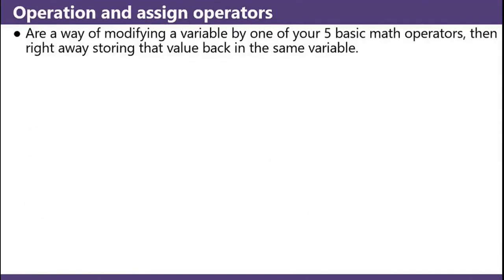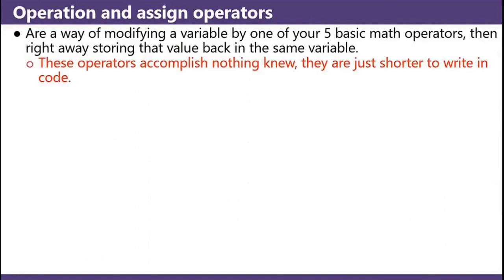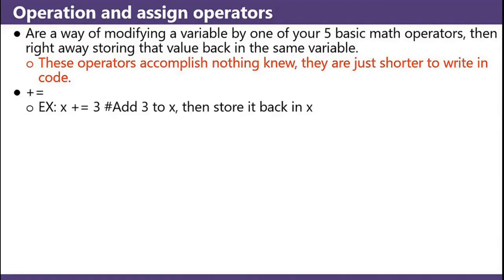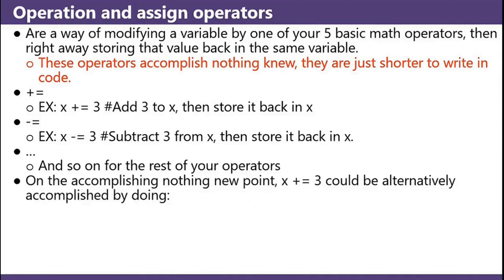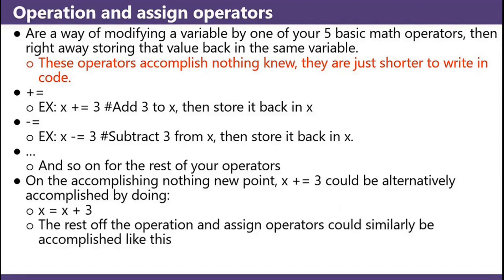Operation and assign operators are a way of modifying a variable by one of your five basic math operators, then right away storing that value back in the same variable. These operators accomplish nothing new — they are just shorter to write in code. Plus equals example: x plus equals 3 means add 3 to x and store it back in x. Minus equals: x minus equals 3 means subtract 3 from x and store it back in x. And so on for the rest of your operators. x plus equals 3 could alternatively be accomplished by x equals x plus 3.